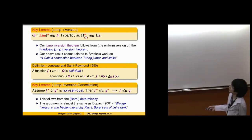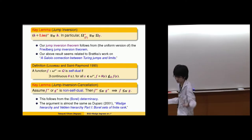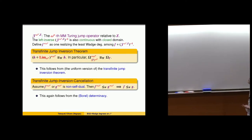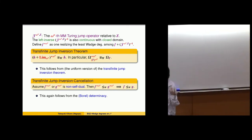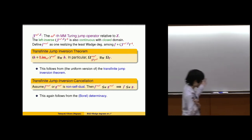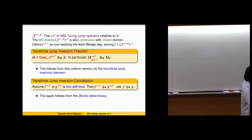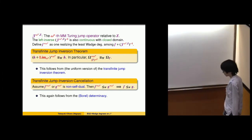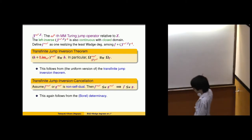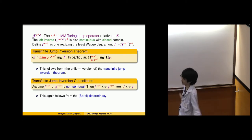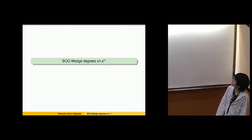We can show that a sigma-T complete function is Wadge-equivalent to the jump-inversion of a sigma-level-T complete function. This is a key lemma for the previous theorem with Antonio. By using Borel determinacy, we can use this jump-inversion operator to analyze the Wadge degree structure. The Friedberg jump inversion theorem and its transfinite extensions are key techniques in the proof.